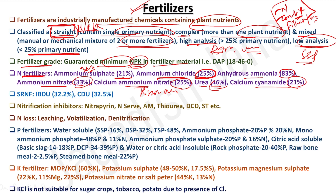To slow nitrogen losses, slow-release nitrogen fertilizers can be used — like IBDU (isobutylidene diurea) containing 32.2% nitrogen, and CDU (crotonidine diurea) containing 32.5% nitrogen. These release nitrogen slowly, reducing losses and improving nitrogen use efficiency.